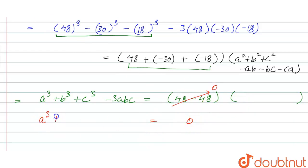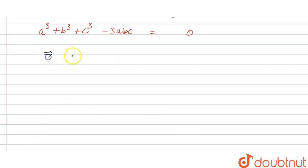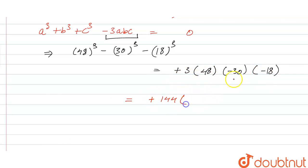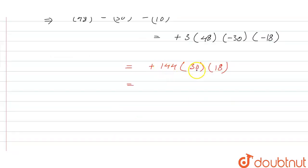So the value of a³ + b³ + c³ − 3abc = 0. Therefore, 48³ − 30³ − 18³ = 3abc = 3 × 48 × (−30) × (−18). The two negatives make a positive, giving 3 × 48 × 30 × 18. That is 144 × 30 = 4320, and 4320 × 18 = 77760. So the final answer is 77760.